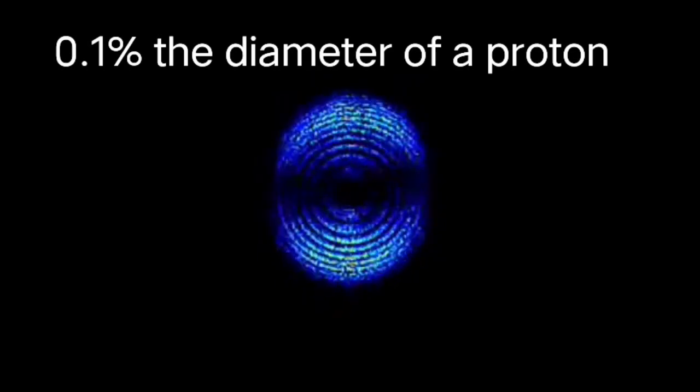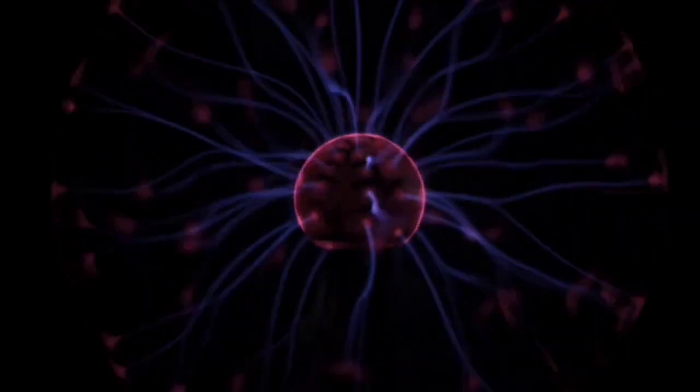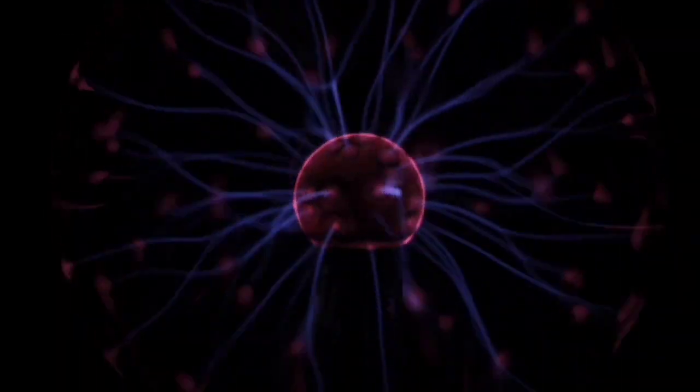When subatomic particles such as protons, neutrons and electrons come within 10 to the power minus 18 meters, or 0.1 percent of the diameter of a proton of one another, they can exchange these bosons. As a result, the subatomic particles decay into new particles.